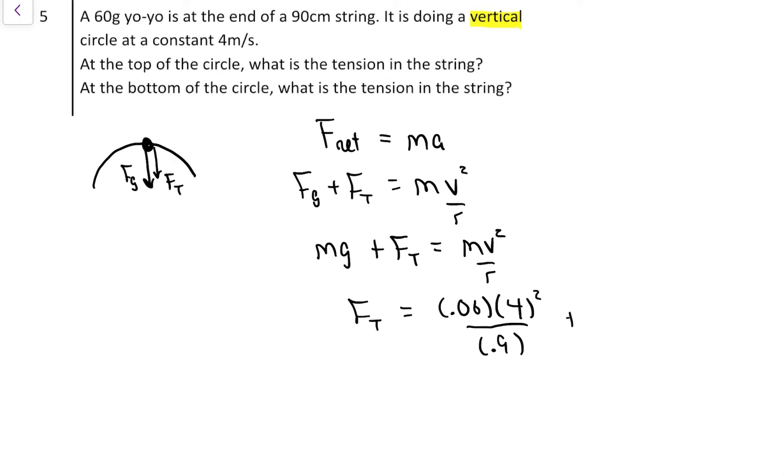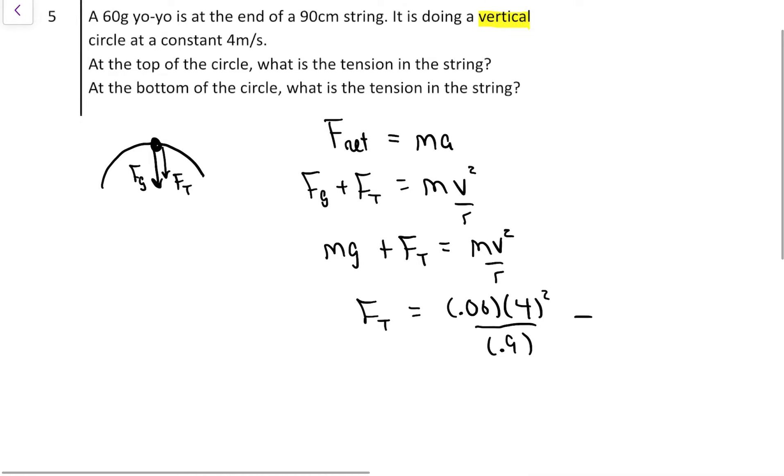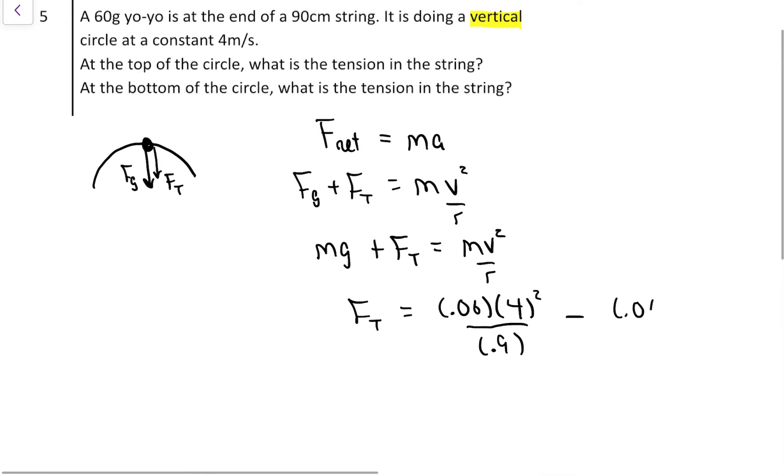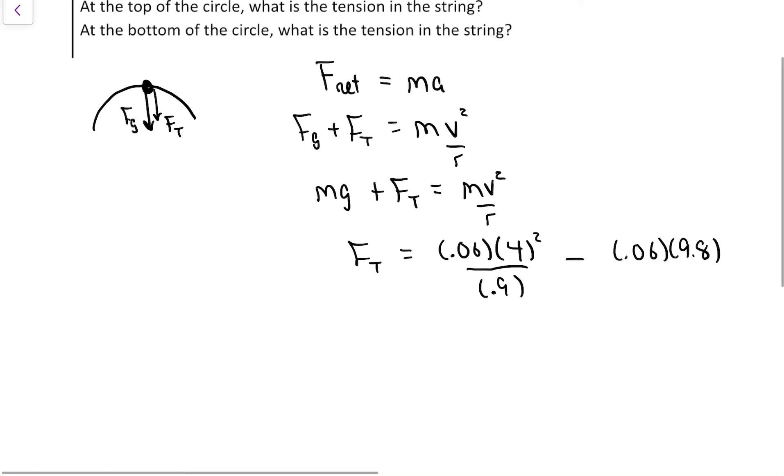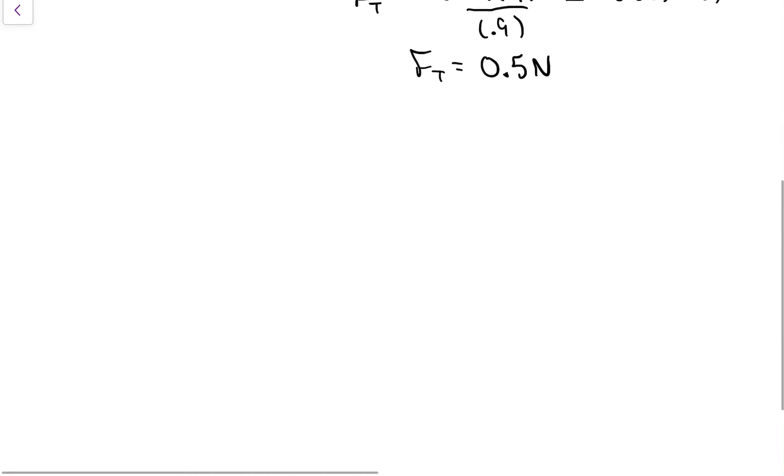And then we've got to flip it to the other side, so it turns into a subtraction. The mass times 9.8, because gravity is helping tension, it's actually a little bit less tension at the top than what we're going to find at the bottom. By cranking it out this way, the numbers work out kind of nice. I get a tension of 0.5 newtons. That's at the top of the circle.